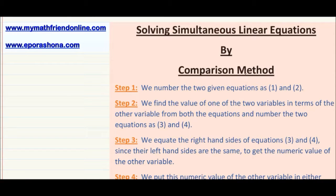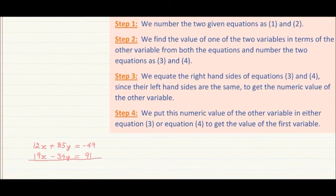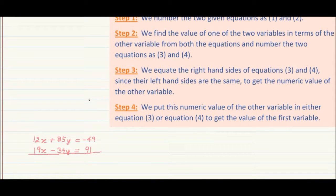So first of all let us take up a sum. We have two linear equations: 12x plus 85y equal to minus 49, and the second one is 19x minus 34y equal to 91. We have been given two linear equations involving the same two variables x and y, and we have to find the values of x and y so that they simultaneously satisfy both the given equations.